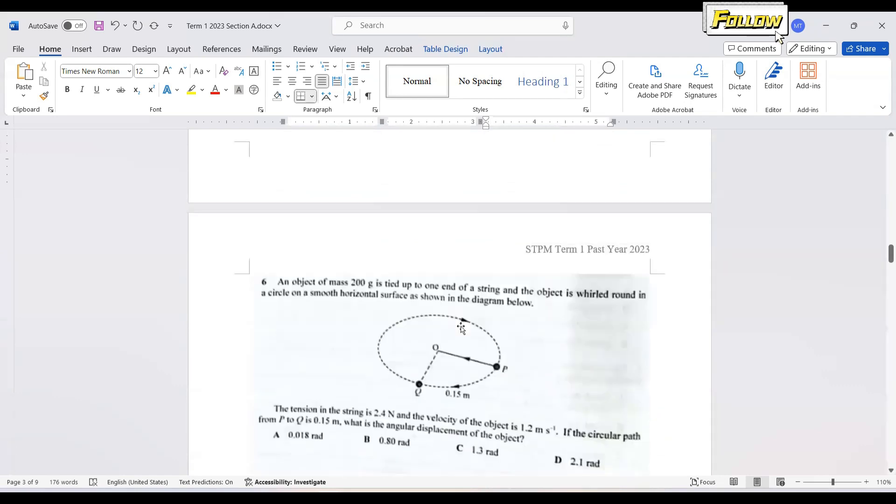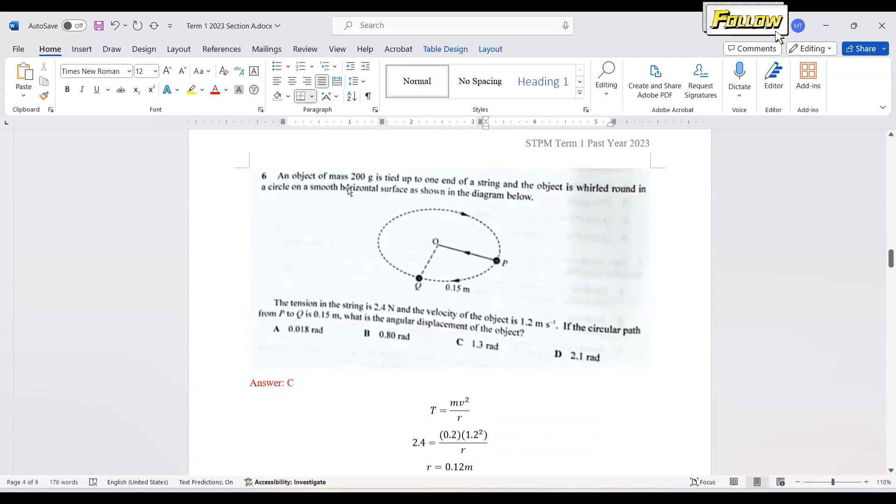We move on to question 6. An object of mass 200G is tied up to one end of the string and the object is rolled around a circle on a smooth horizontal surface as shown in the diagram. The tension in the string is 2.4 N, velocity is 1.2 m per second. If the circular path from P to Q is 0.15 m, what is the angular displacement of the object? First of all, to solve this question, we need to obtain the radius of the circular path.